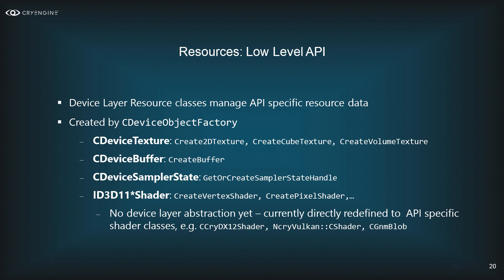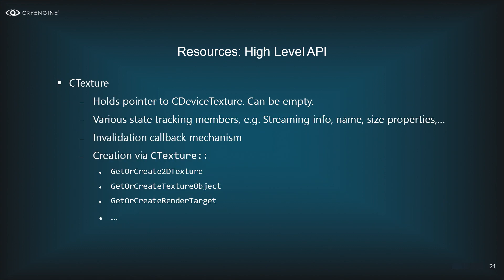At the high-level API, the CTexture object is one you'll see quite often. It can be empty — it holds a pointer to the device texture, but that pointer can be null — so you're free to allocate empty texture objects and only allocate GPU memory on demand. It has various state tracking: it knows about streaming, which mipmaps have been streamed in and which are desired. It also has an invalidation callback mechanism so that when the texture drops mips or deletes GPU memory, client code registered as a listener gets a callback.